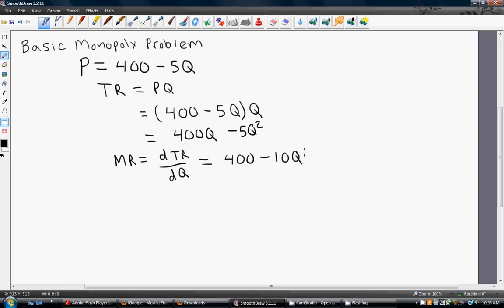Alright, so we got marginal revenue equals 400 minus 10Q. We want to set that result equal to marginal cost. So, we need to know something about the firm's cost structure.